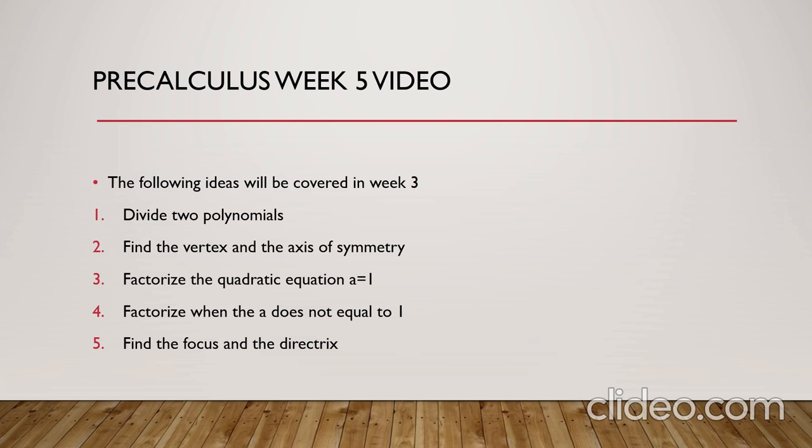After that, we will focus on a certain type of polynomial: the quadratic polynomial or quadratic functions. First, we will find the vertex, which is a point (x, y) that lies on the parabola. x is called the axis of symmetry, and y is called the maximum or minimum of the graph depending on the value of a.